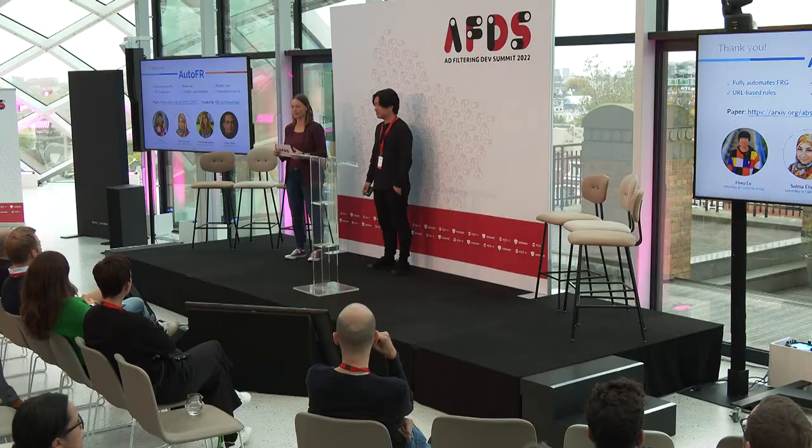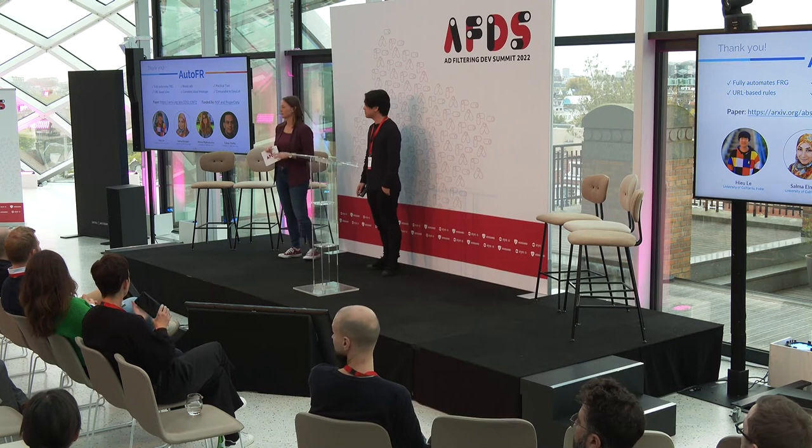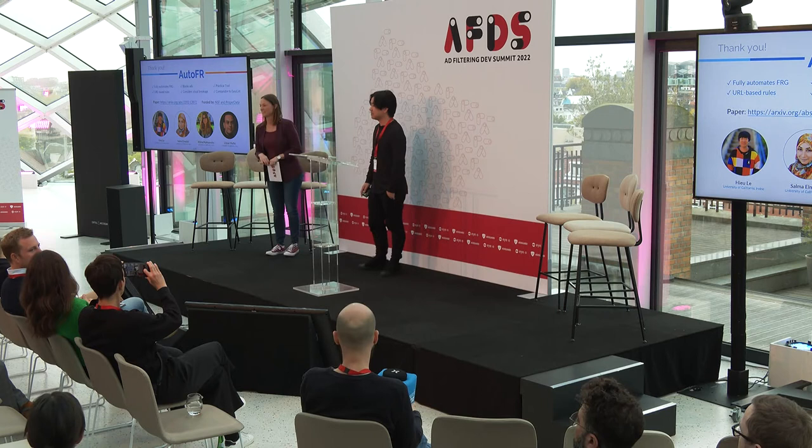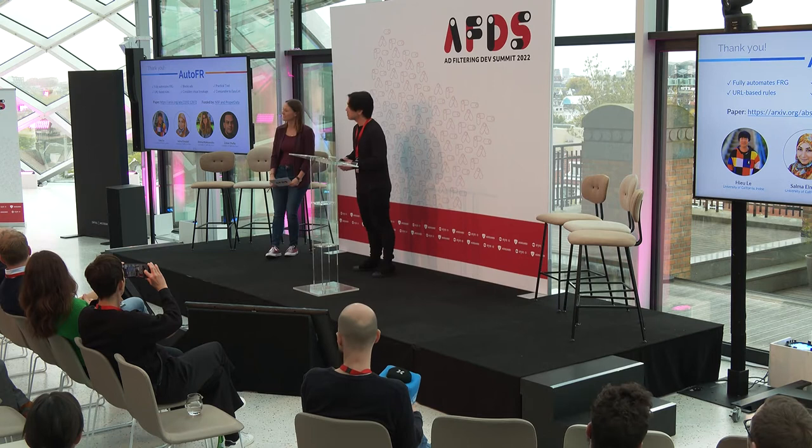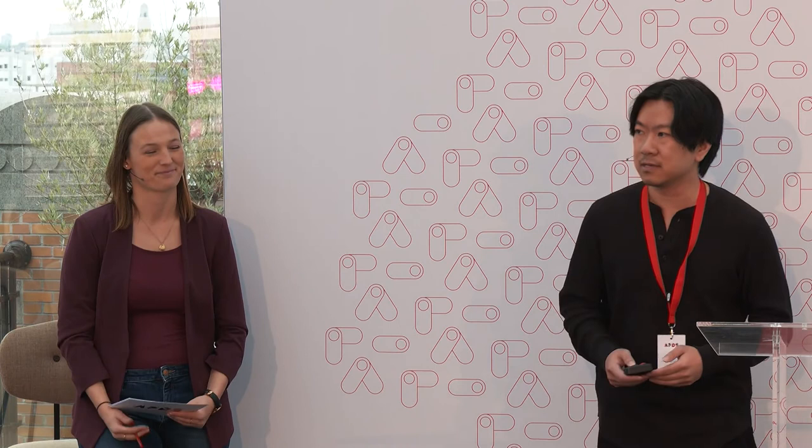In the Q&A: Asked how performance was evaluated versus EasyList, the presenter explained that to make EasyList more comparable with AutoFR — which focuses only on URL-based rules — they stripped out all non-URL-based rules, keeping only network blocking rules, and applied them on the top 5K. AutoFR's reward function can also be used to evaluate performance. A manual verification in the paper confirmed similar results.